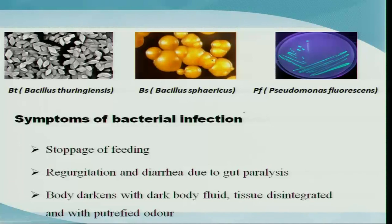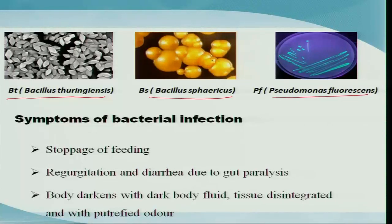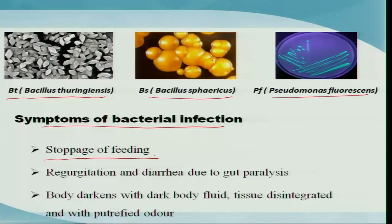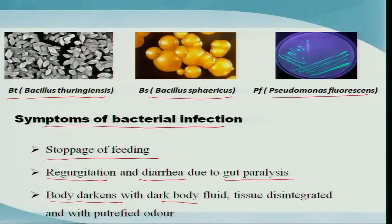Important bacterial species employed include Bacillus thuringiensis (Bt), Bacillus sphaericus, and Pseudomonas fluorescens. Symptoms of bacterial infection include rupturing of midgut epithelial cells as soon as the crystalline body releases the toxin. The insect stops feeding immediately, followed by regurgitation and diarrhea due to gut paralysis. As the bacteria enter and kill the host body cells, the body becomes dark with a dark body fluid, and the tissue disintegrates, leading to death.